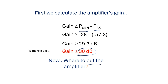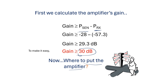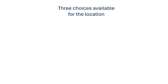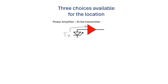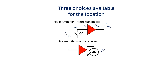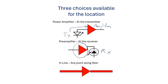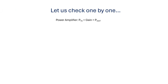Now, where do we place the amplifier? There are three choices. First, a power amplifier placed just after the transmitter. Second, a pre-amplifier placed just before the receiver. Third, an inline amplifier placed at some point along the fiber where the power has degraded. Let us check each option one by one.